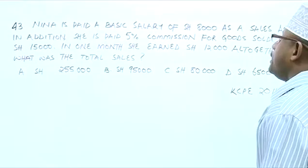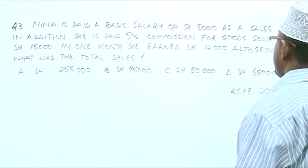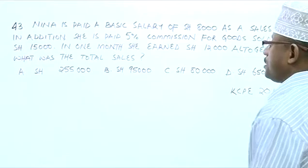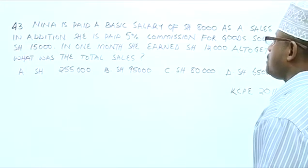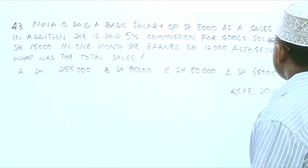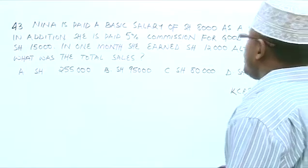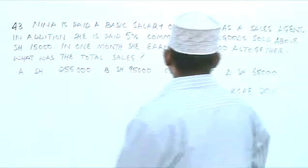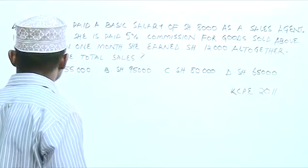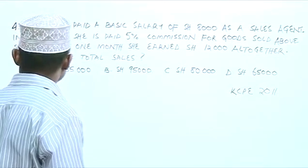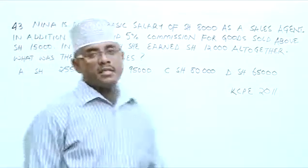Nina is paid a basic salary of $8,000 as a sales agent. In addition, she is paid 5% commission for goods sold above $15,000. In one month, she earned $12,000 altogether. What was the total sales?